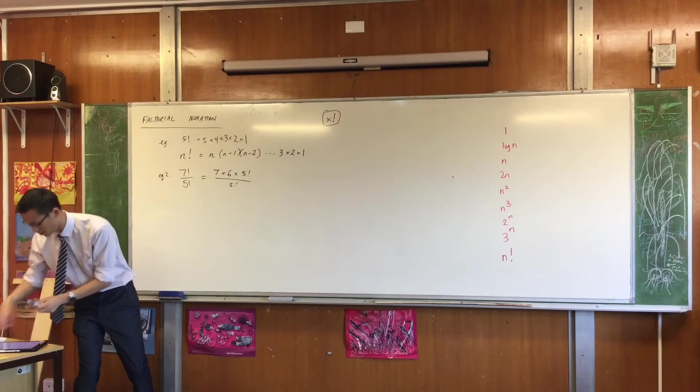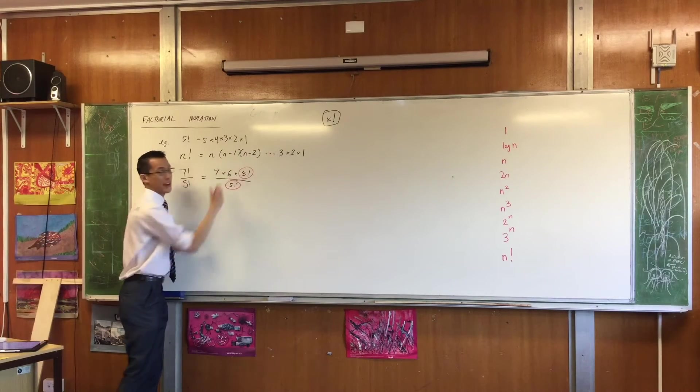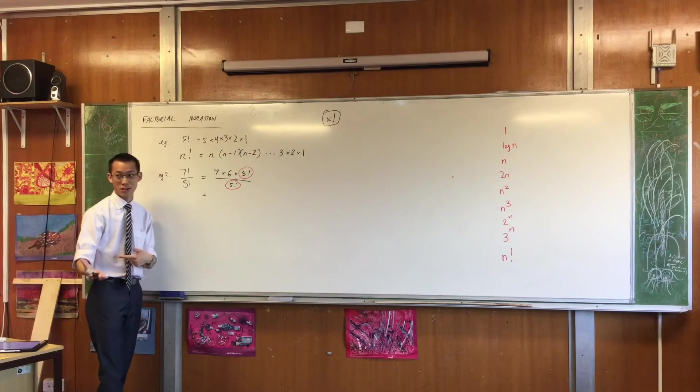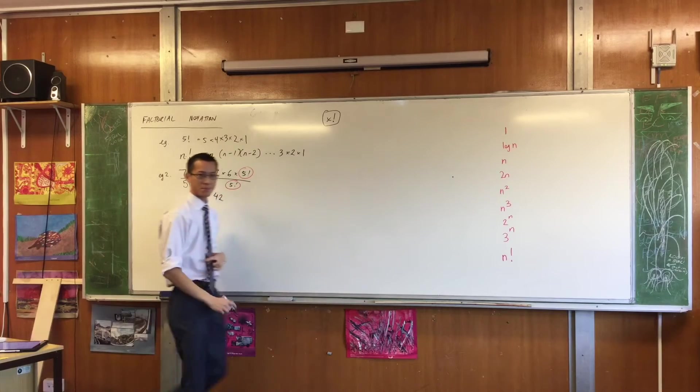I've just sort of pulled this bit out so that I can identify the common factor nice and easily. And as Morgan suggested, this 5 factorial and this 5 factorial are gone, which leaves me with 7 times 6, which of course is just 42. Okay? Cool.